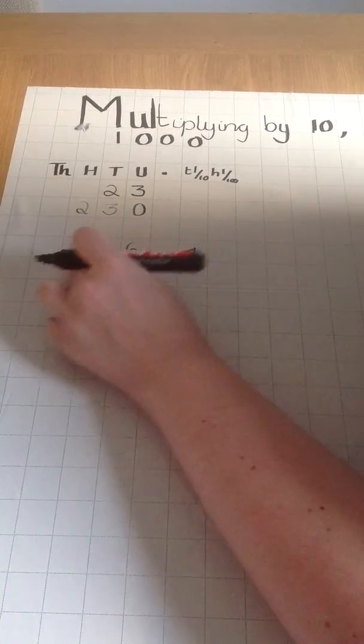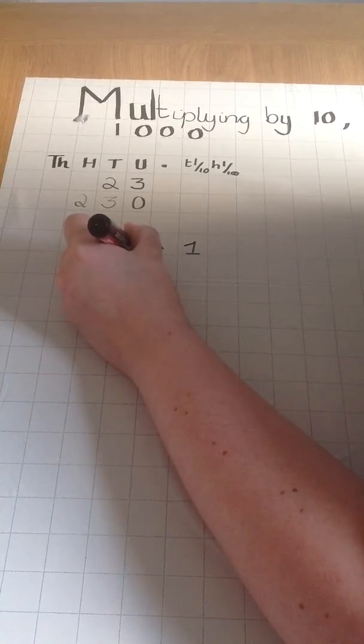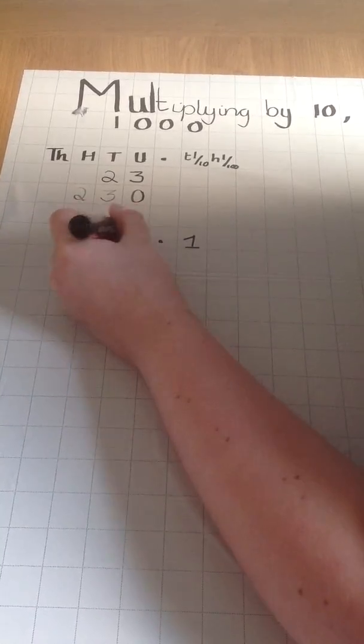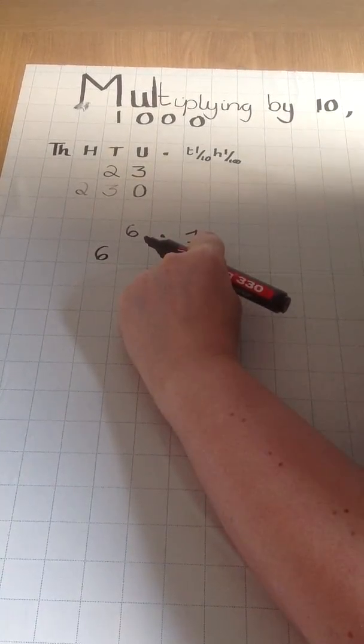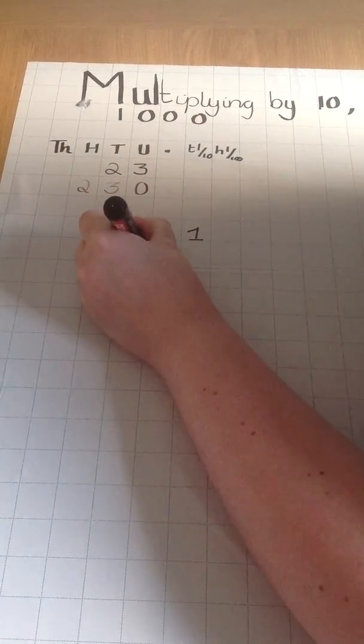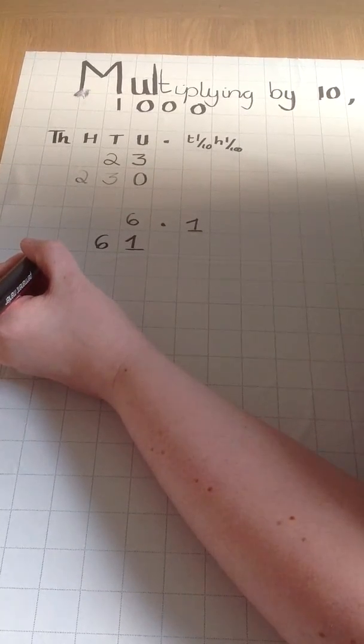When multiplying by 10, you move everything one place to the left. So, 6 times 10 becomes 60. 0.1 times 10 becomes 1. That is how you multiply by 10.